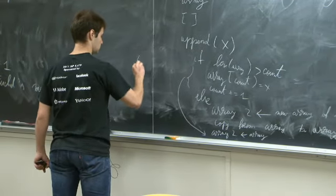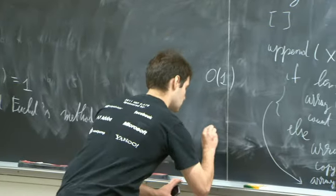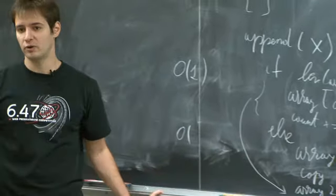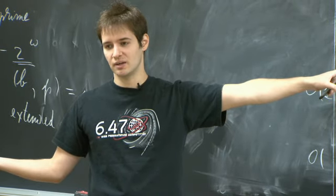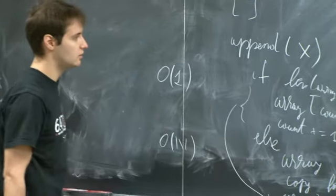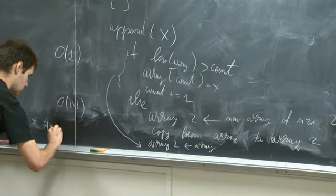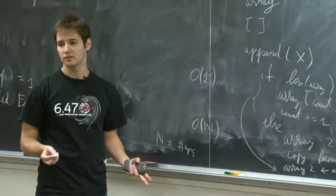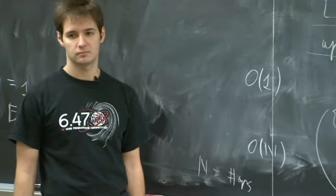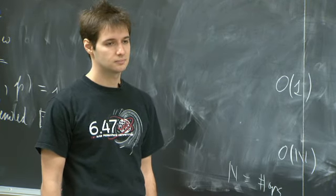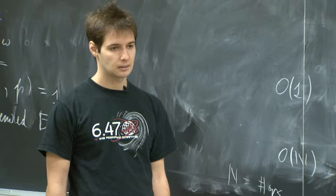Allocating memory is assumed to be O(1) from a theoretical standpoint, though in practice it can be logarithmic. The real cost is copying the elements, making append O(n) worst case. So if we do line-by-line analysis of n appends on an empty list, each append is O(n) worst case, giving a total of O(n²). But this is not a tight bound — it's not actually n squared.